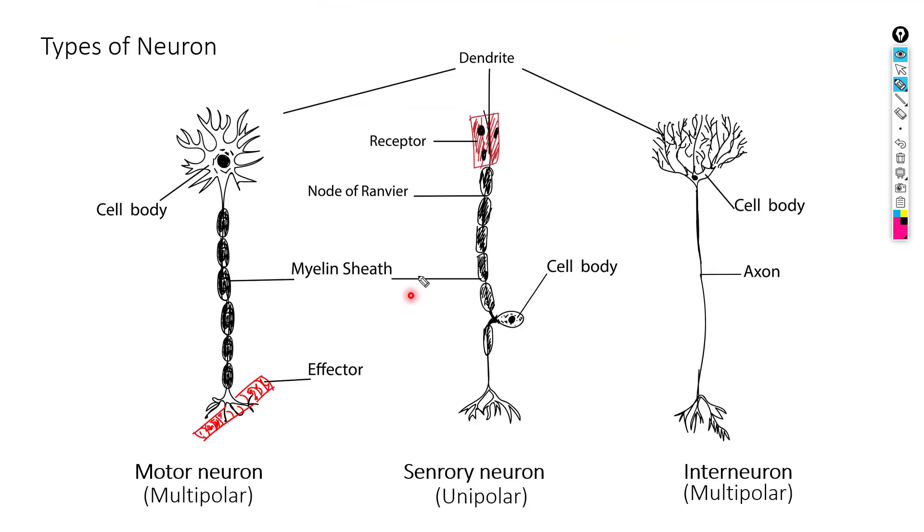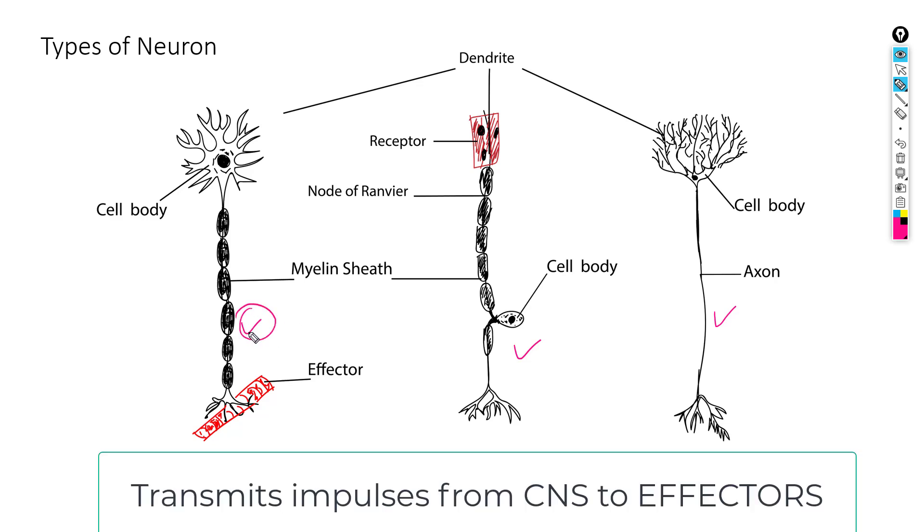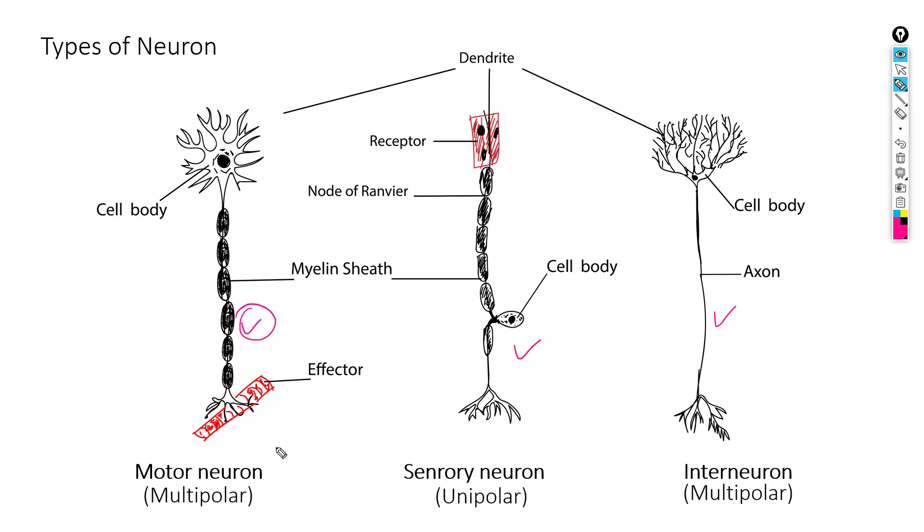In terms of the functions they perform, there are three different types of neurons found in your body. Motor neuron here is used for transmitting impulse from central nerve system towards effectors like muscles and glands. And they are also called efferent neurons.